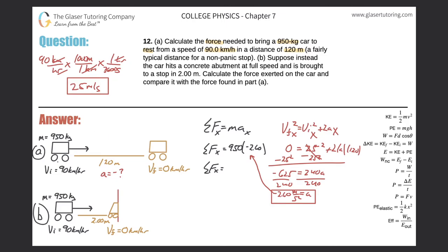950 times 2.6—I know it's negative, I just didn't say it—so it's going to be negative 2470 Newtons. Don't forget to plug in that negative sign. That's part a.